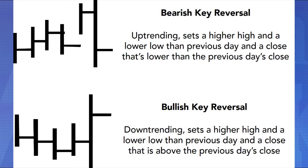Our second topic is technical key bearish and bullish reversal chart patterns. A bearish key reversal occurs in an uptrend when price sets a higher high and a lower low than the previous day, with a close lower than the previous day — the trading range is wider and the close is lower. The opposite is a bullish key reversal, where the trading range is wider but the close is higher. These can also be false signals, so you need to confirm the change in trend.